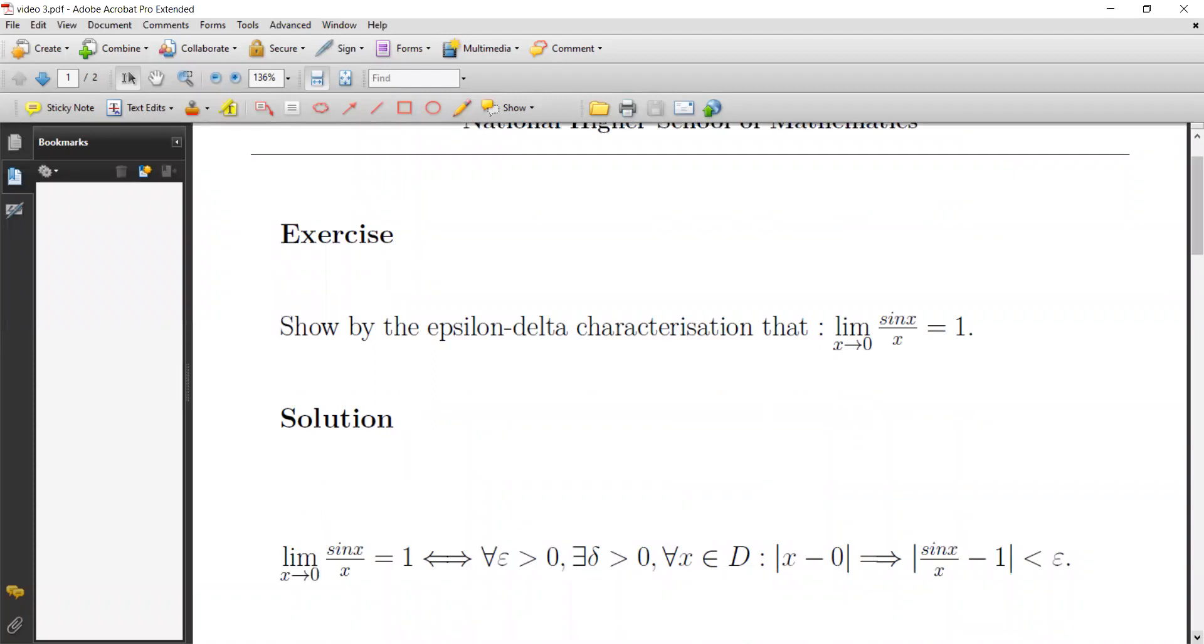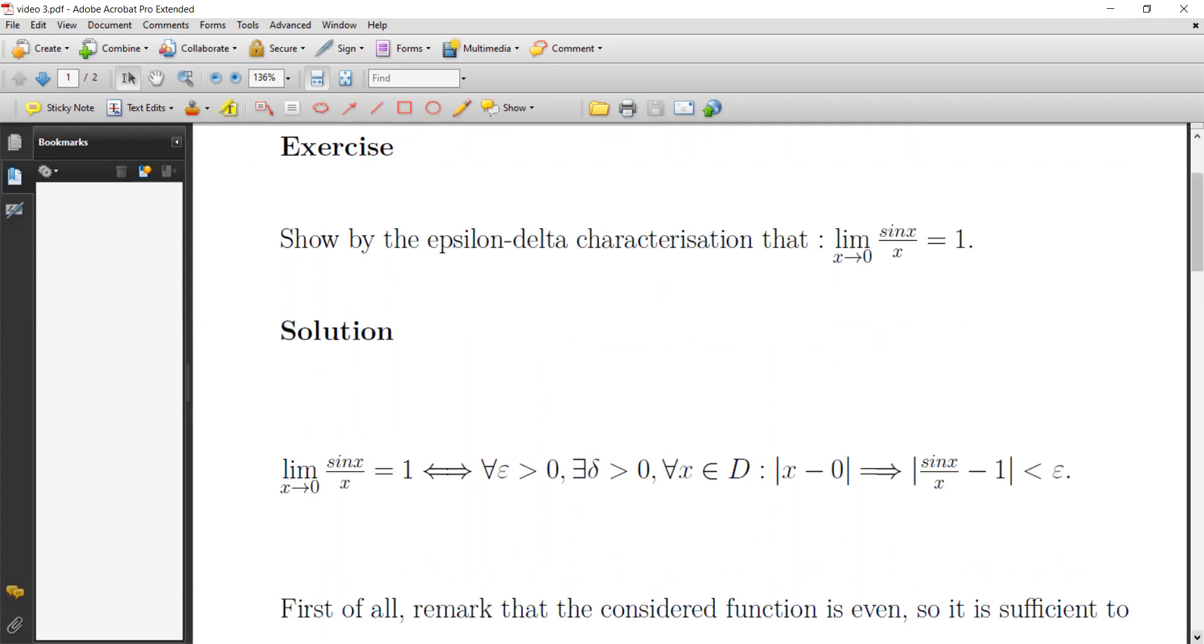This is an exercise to show by the epsilon-delta characterization of the limit that the limit of sine x over x when x goes to zero is equal to one. This is a proposed solution. Now the characterization of the limit is as follows: the limit of sine x over x when x goes to zero equals one.